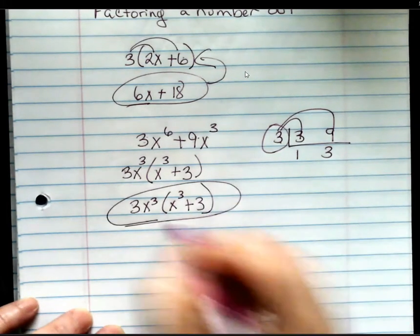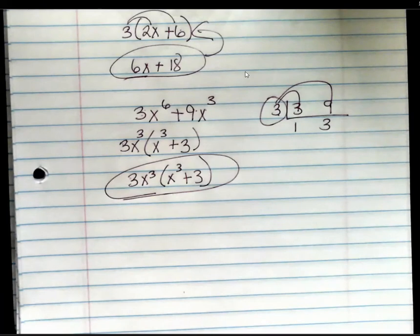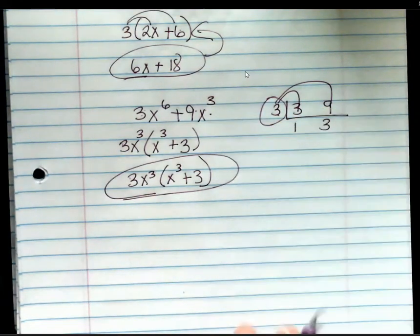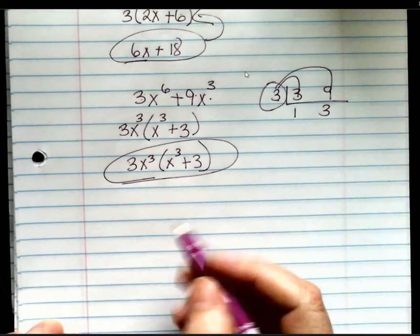And that's factoring a digit out. If we were to multiply it back out, we would get this problem. Okay. So let's look at another one.